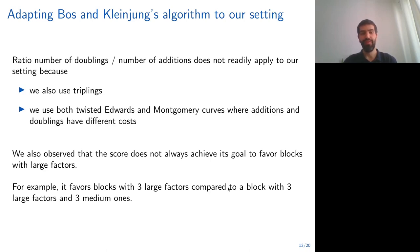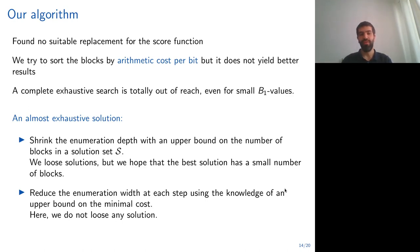When we try to adapt Bos and Kleinjung's algorithm to our setting, we encounter multiple problems. First, we look at the ratio between the number of doublings and the number of additions that they use to sort the blocks. The first problem was that we use triplings, so we need to add this in the ratio. But also, we use both Twisted Edwards and Montgomery curves, where the cost of additions and doublings are different. So it was not straightforward to find one single value to replace this ratio. We also observe that the score function does not always achieve its goal to favor blocks with large factors.